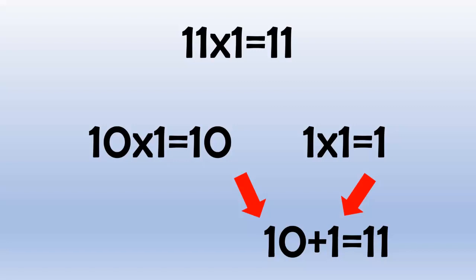11 times 4 equals 44, because 10 times 4 equals 40, and 1 times 4 equals 4, and 40 plus 4 equals 44.